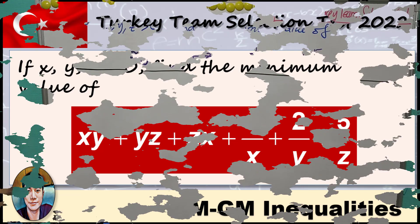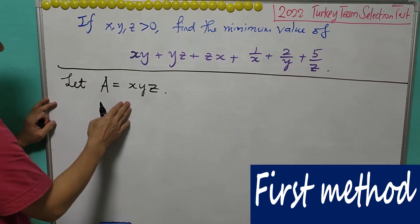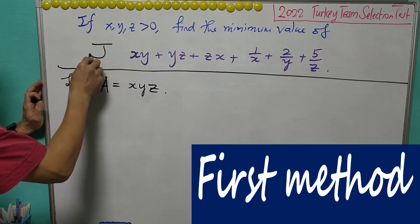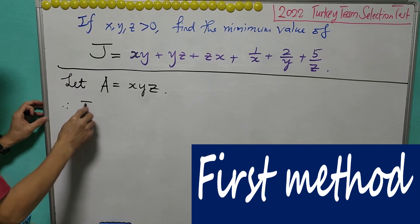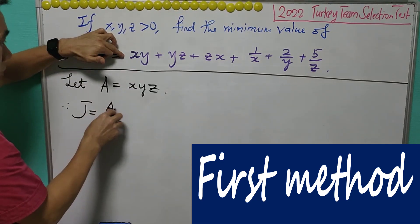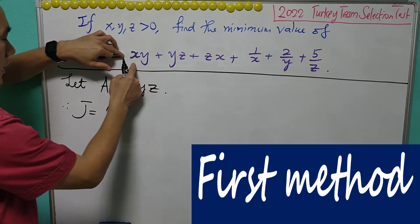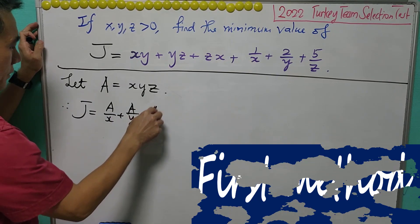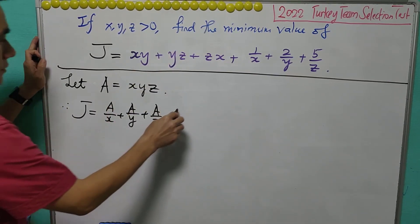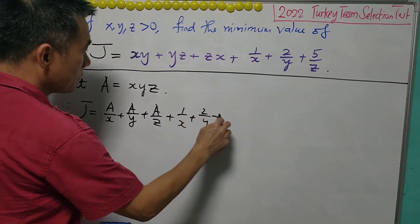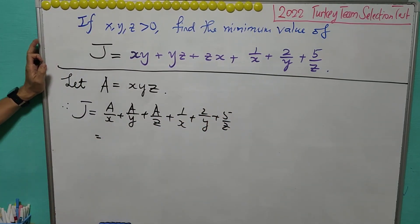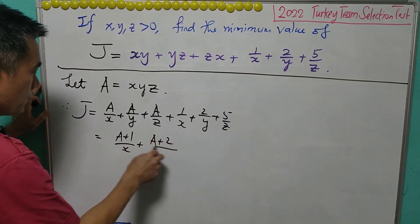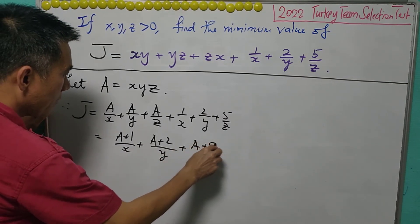For the first method, we let A be the product of XYZ. So let's call this expression J. J will equal A over X plus A over Y plus A over Z for the first three terms, and combined with the last three terms, we have A plus 1 over X, plus A plus 2 over Y, plus A plus 5 over Z.